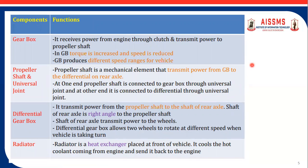The gearbox is the third important component of the power transmission system. Its function is to take the power from the clutch and transmit it to the propeller shaft. In the gearbox, torque is increased and speed is reduced, allowing gear ratios to be changed over time. The propeller shaft is a mechanical element that transmits power from the gearbox to the differential gearbox. It has universal joints present at both ends — one end connected to the differential gearbox and the other end connected to the gearbox.